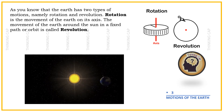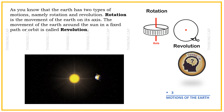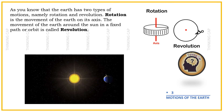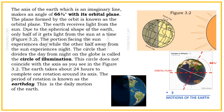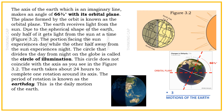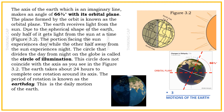Rotation is the movement of the Earth on its axis. The movement of the Earth around the Sun in a fixed path or orbit is called revolution. The axis of the Earth, which is an imaginary line, makes an angle of 66.5 degrees with its orbital plane.